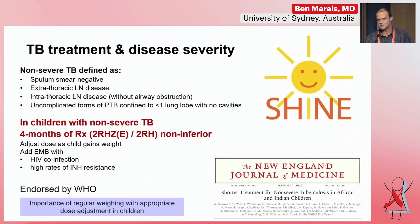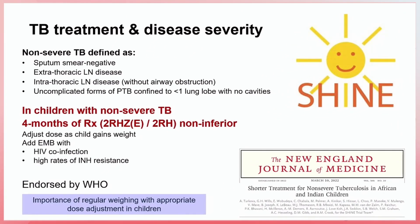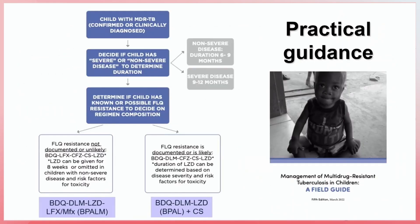The SHINE trial looked at treatment shortening in children with drug-susceptible TB. It showed that children with non-severe TB can be treated with a shorter four-month treatment course. This same rationale can be applied for drug-resistant tuberculosis. In the Sentinel group's updated 2022 field guide, children with MDR or suspected MDR-TB can be classified as severe or non-severe disease, which determines treatment duration.